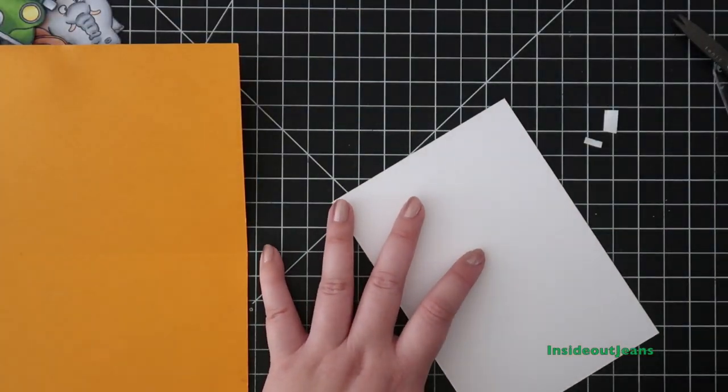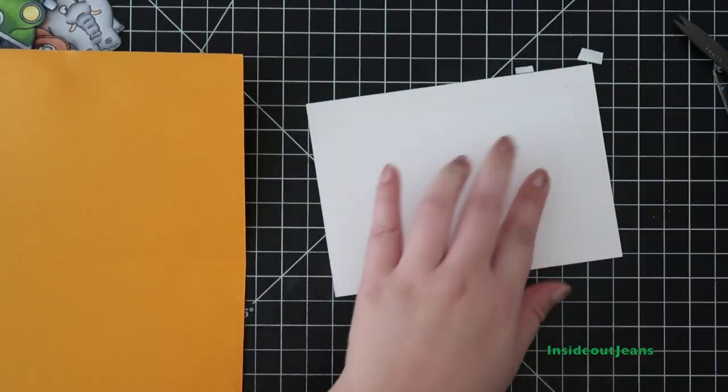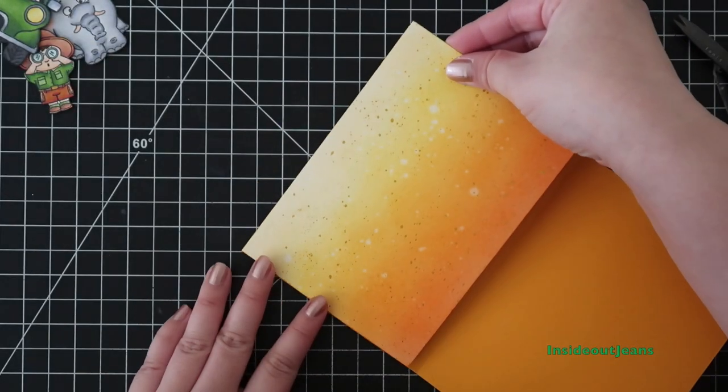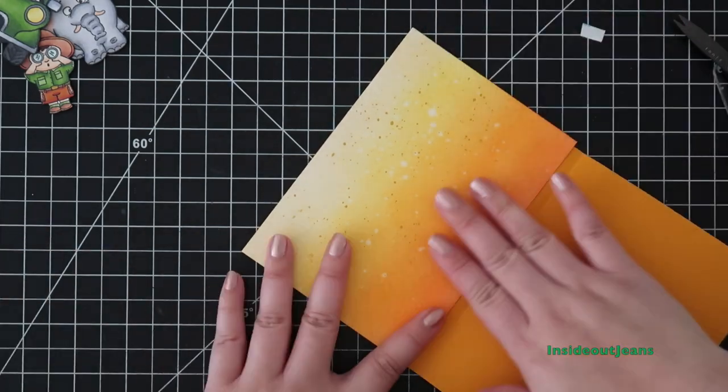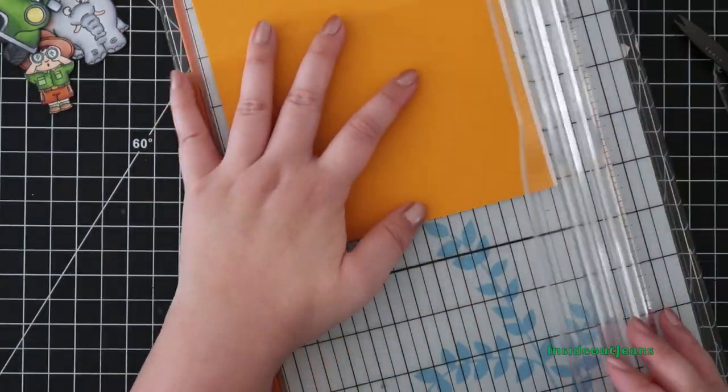I'll get started putting this card together by taking that distressing background and attach it to the card base. And I'll trim off any of the excess that's hanging over the card.